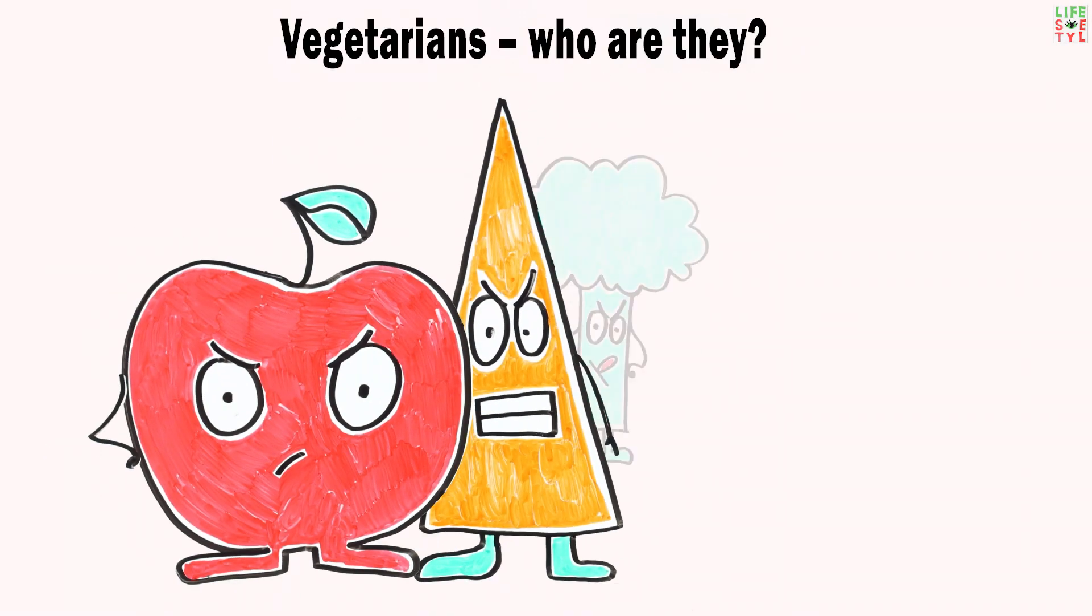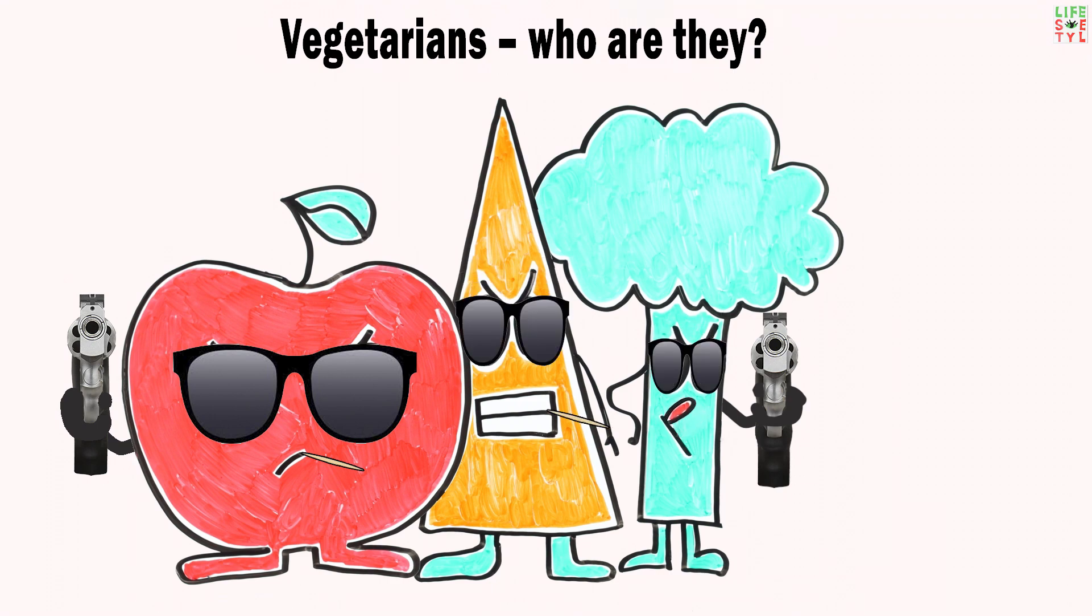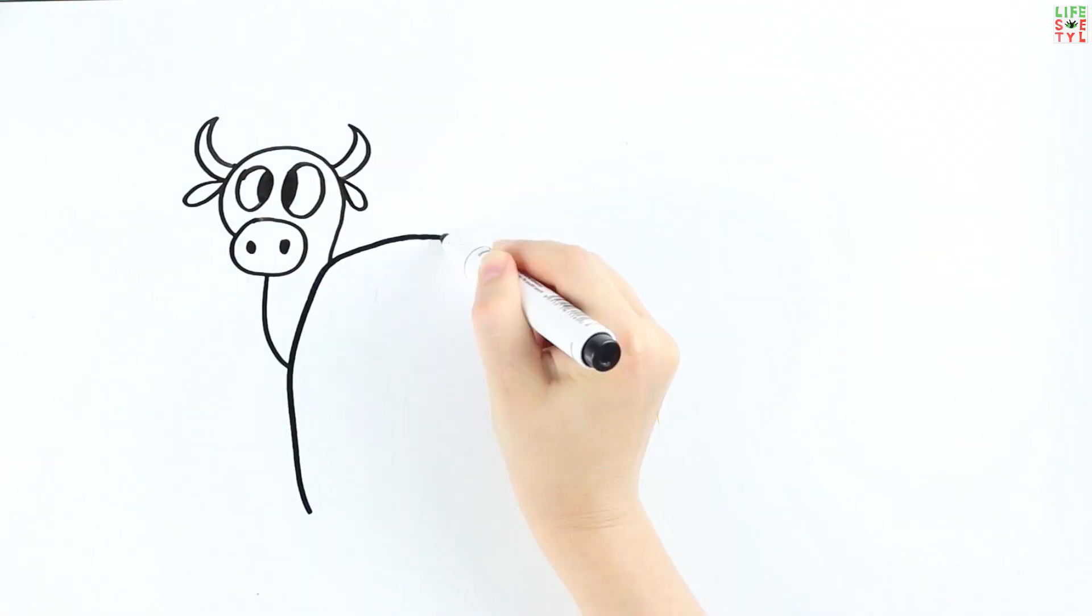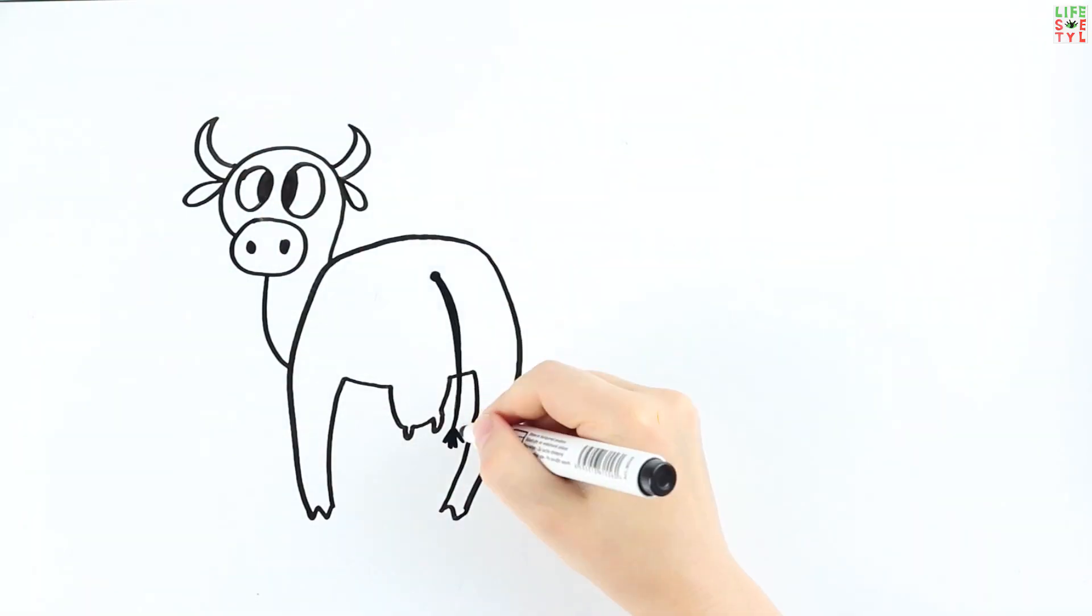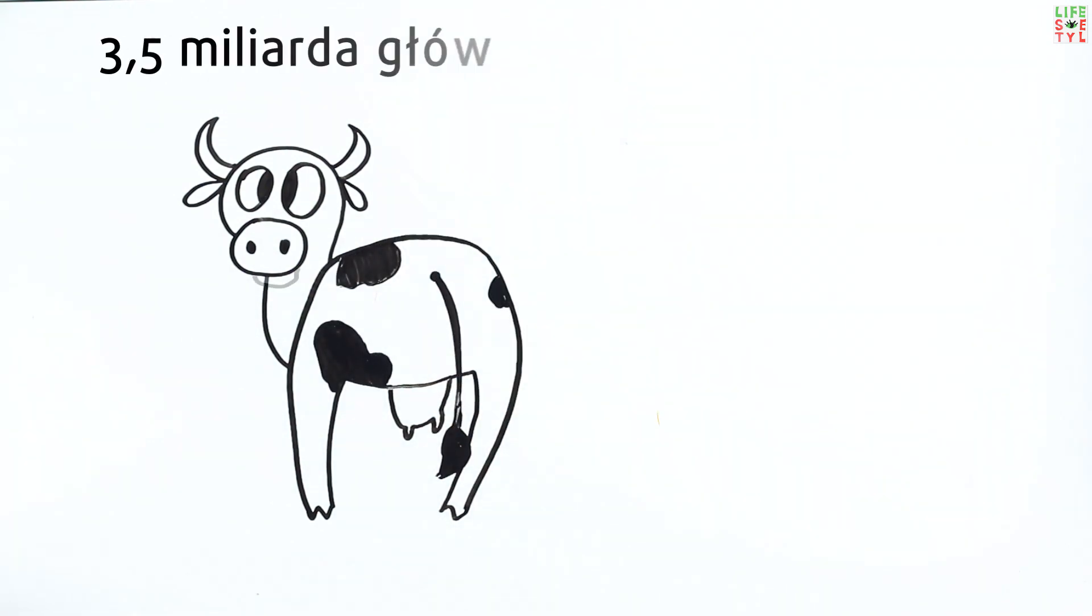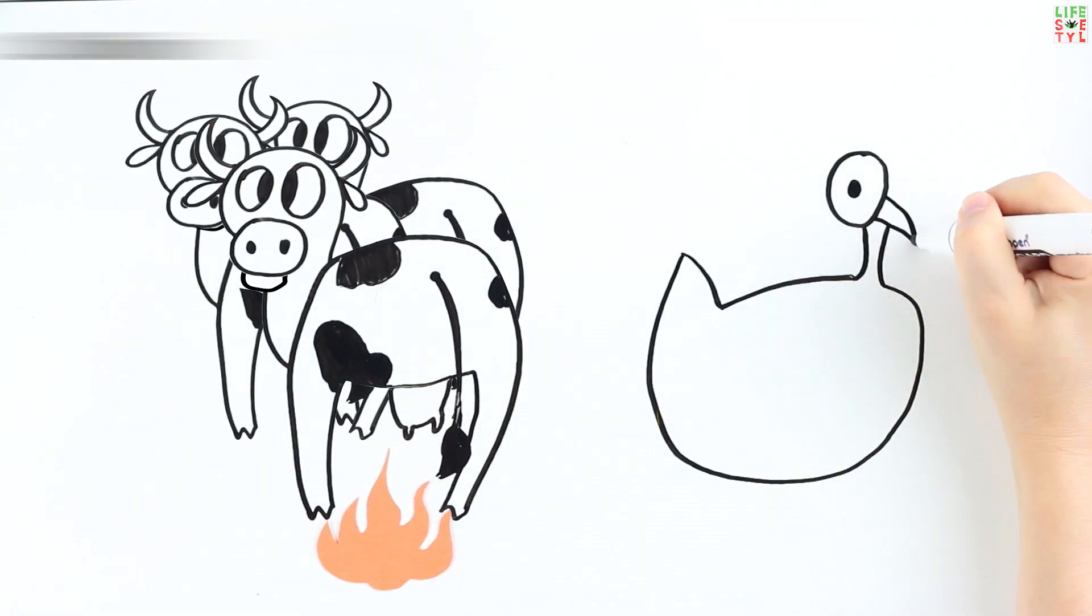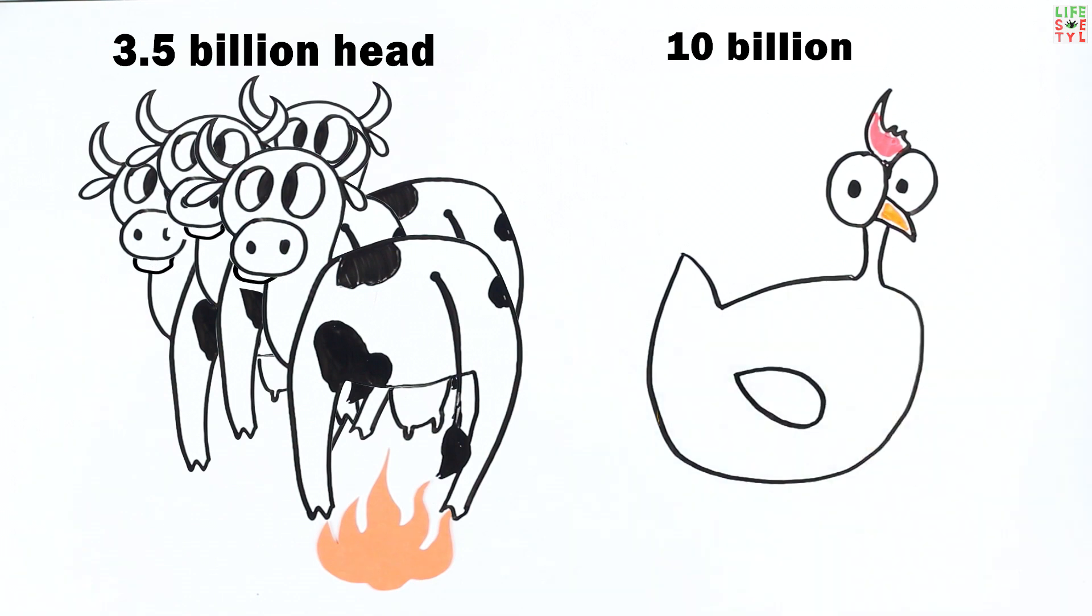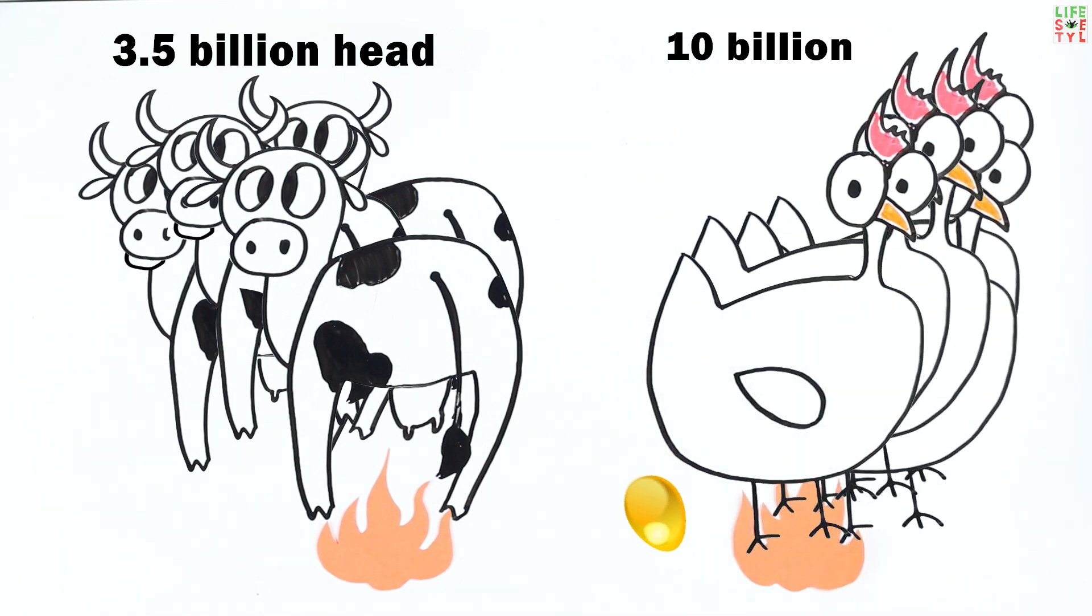What if the whole world goes vegetarian right now? On Earth, there are more than 3.5 billion domestic ruminants and people that consume meat from tens of billions of chickens annually. What would happen if all people suddenly became vegetarians?